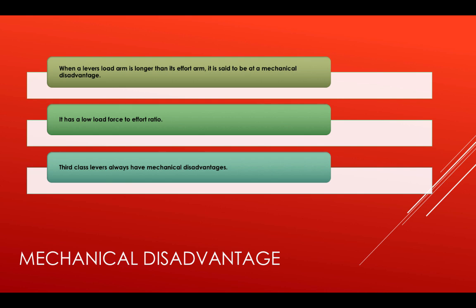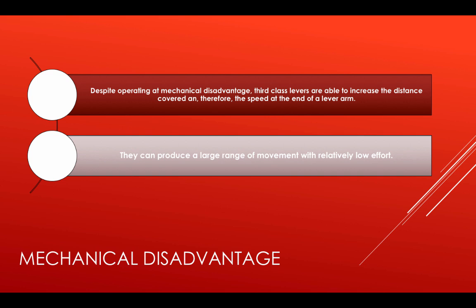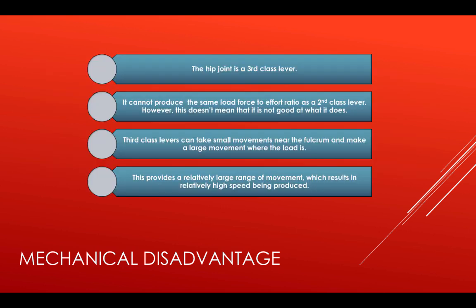When a lever's load arm is longer than its effort arm, it is said to be a mechanical disadvantage — it has a low load force to effort ratio, and third class levers always have a mechanical disadvantage. Despite operating at a mechanical disadvantage, third class levers are able to increase the distance covered and therefore the speed at the end of the lever arm. They can produce a large range of movement with relatively low effort. Third class levers cannot produce the same load force to effort as a second class lever; however, they can take small movements near the fulcrum and make a large movement where the load is, providing a relatively large range of movement and resulting in a relatively high speed being produced.